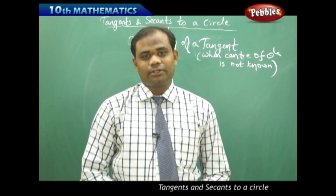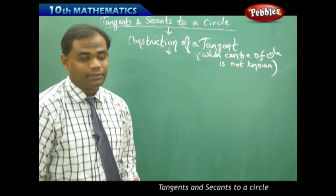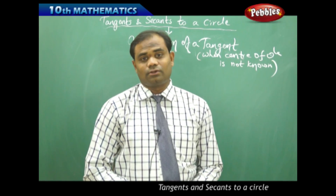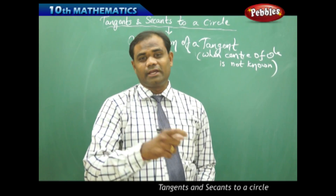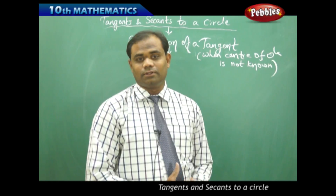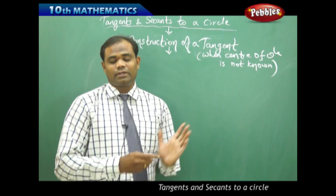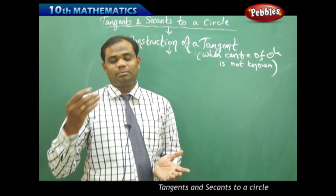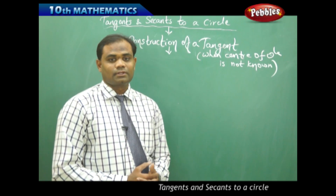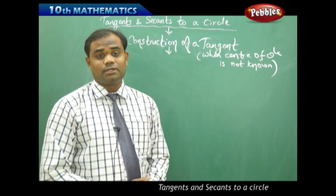This topic is the continuation of the previous session on construction of a tangent. The difference is that here I have to construct a tangent to a circle whose center is not known. When the center is not known, we don't know the radius, and hence we cannot draw a perpendicular line based on the radius. So how do we construct a tangent when the center is unknown?